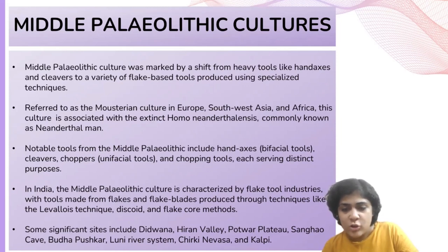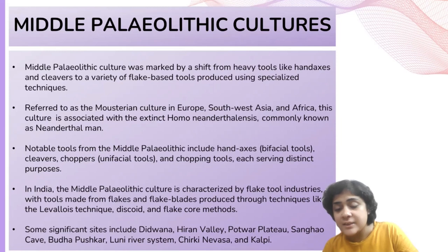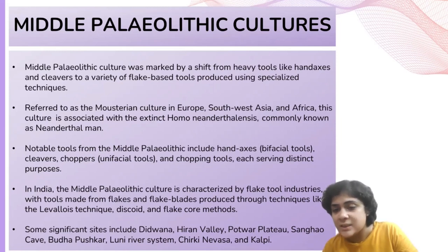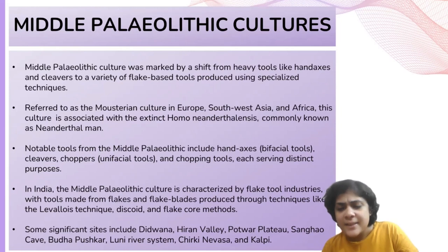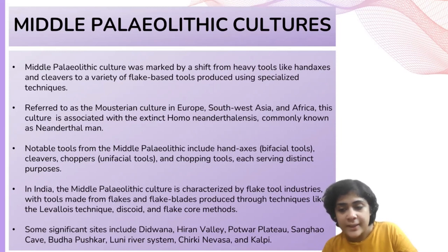Tool types also included unilateral or bilateral Levallois points, tanged or shouldered points, miniature hand axes, cleavers, and utilized flakes. Anvils and hammer stones were also found at manufacturing sites. Techniques employed for tool manufacture included the use of stone hammers, cylinder hammers, and the Levallois technique. Raw materials used were medium to fine-grained quartzite and jasper.